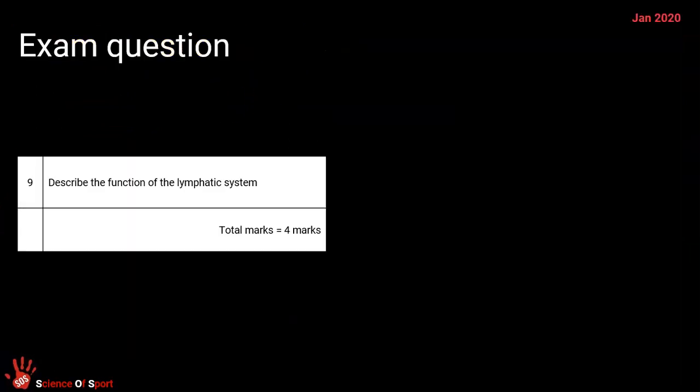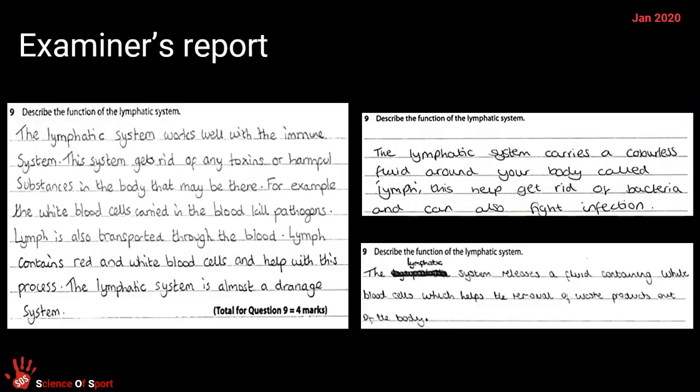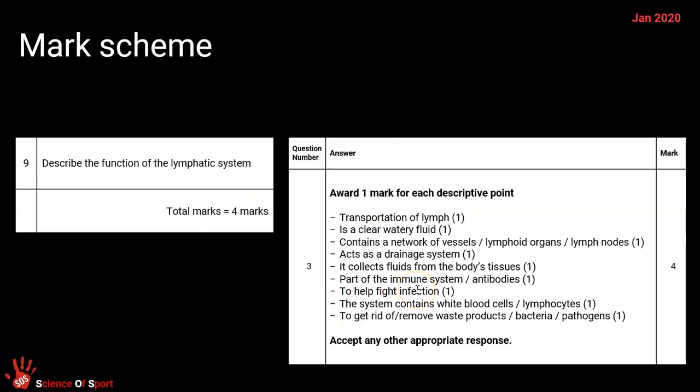The question that we've had on this was for four marks, describe the function of the lymphatic system. In actual fact, this was the mark scheme. This is a brilliant place to start for being really clear with what you should be able to know and the facts that you should be able to relay about the system. It transports lymph. It's a clear watery fluid. It's got vessels and lymph nodes. It's a drainage system. It collects the extra fluid from our body tissues. It connects with the immune system because it provides antibodies. It fights infection. White blood cells do that for us. We get rid of any waste products and pathogens and toxins. So that is a brilliant way to learn, I think, more or less what you need to know about the lymphatic system.